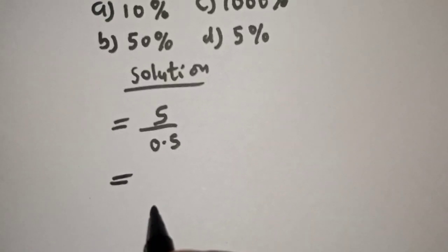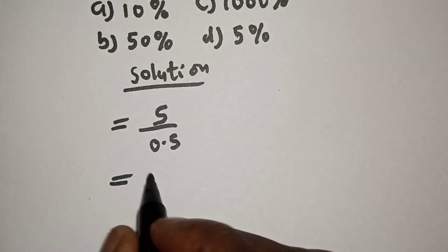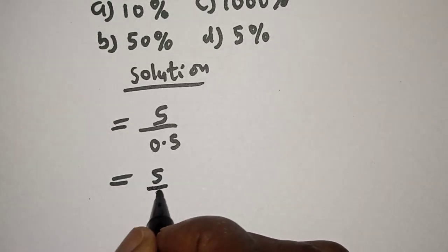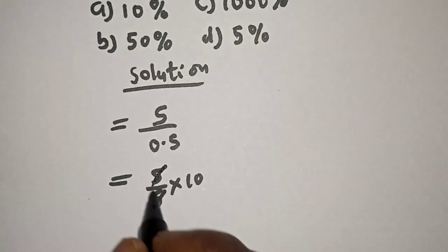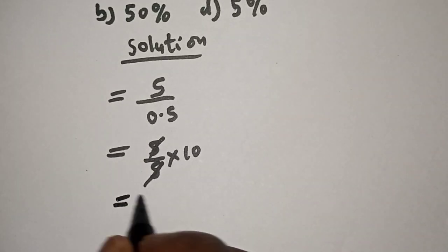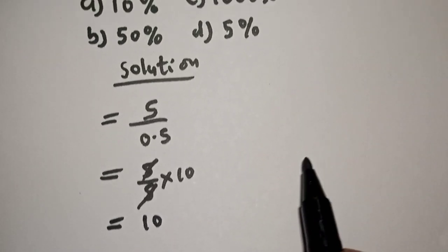This is equal to 5 over 5 multiplied by 10. This will cancel this. This is equal to 10, but our answer is in percentage.